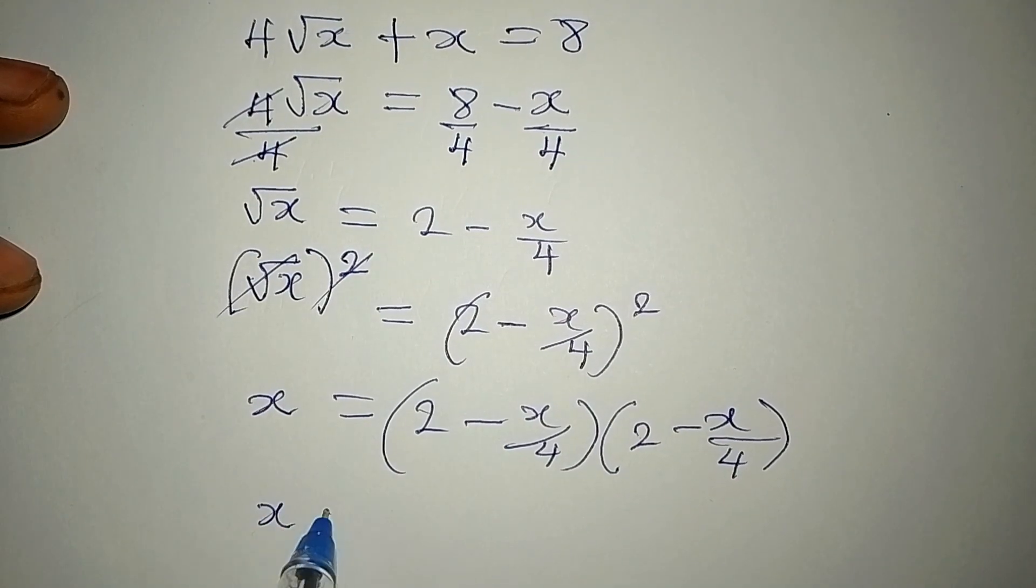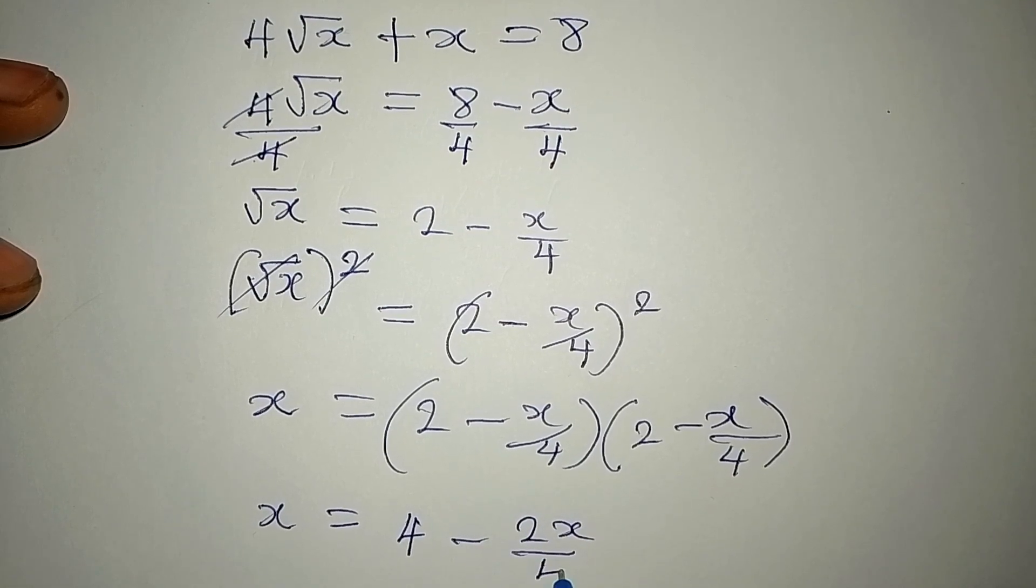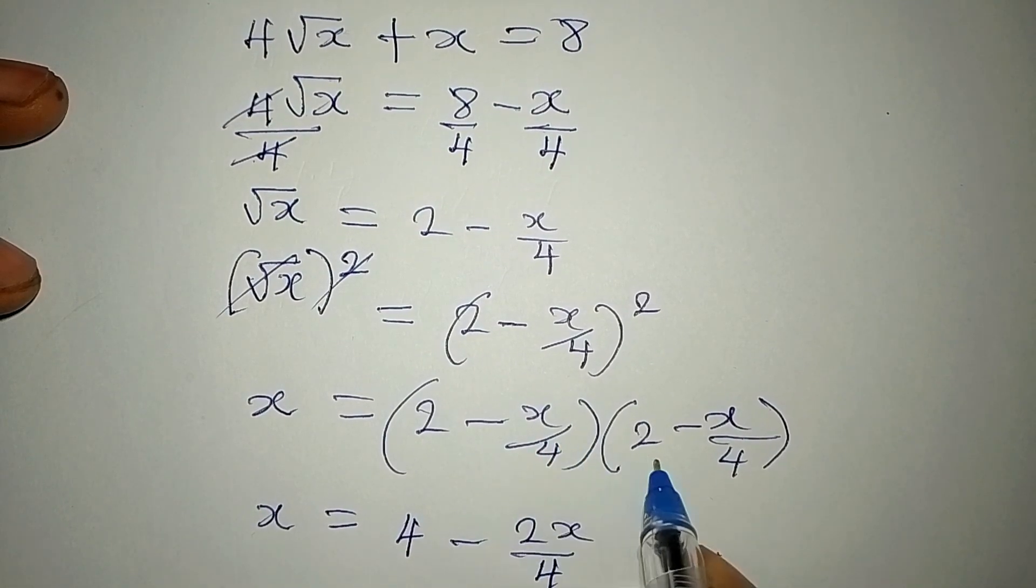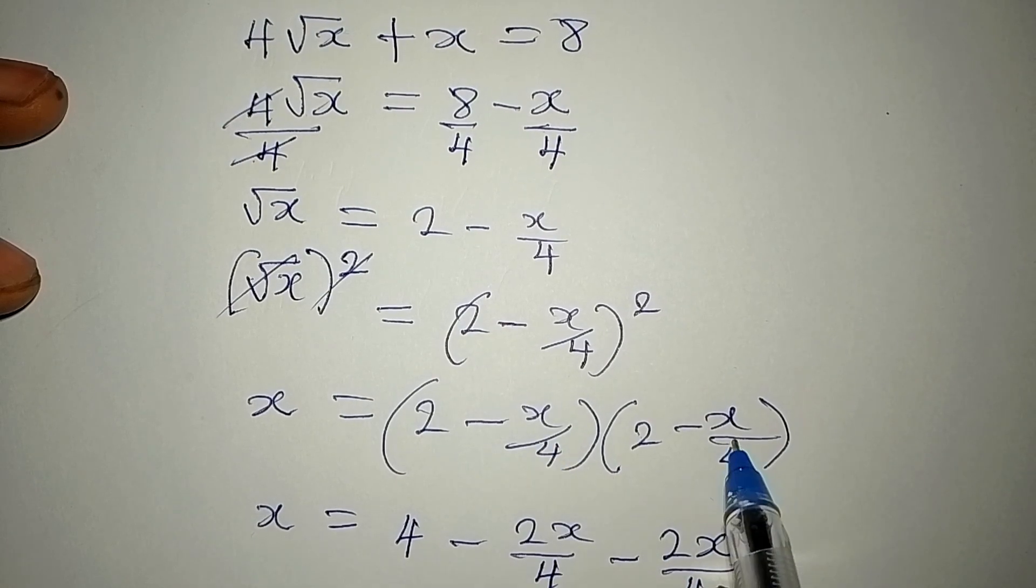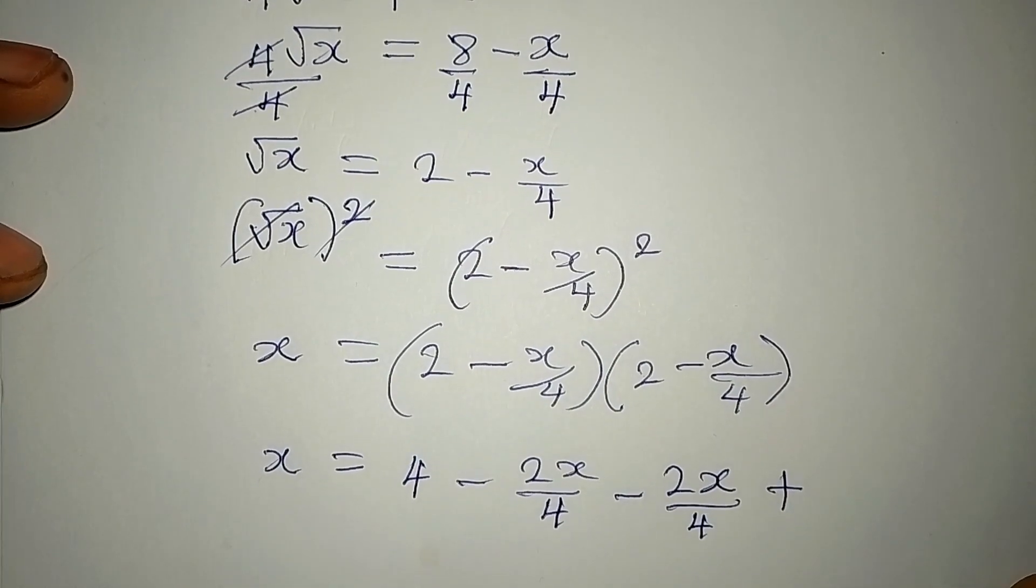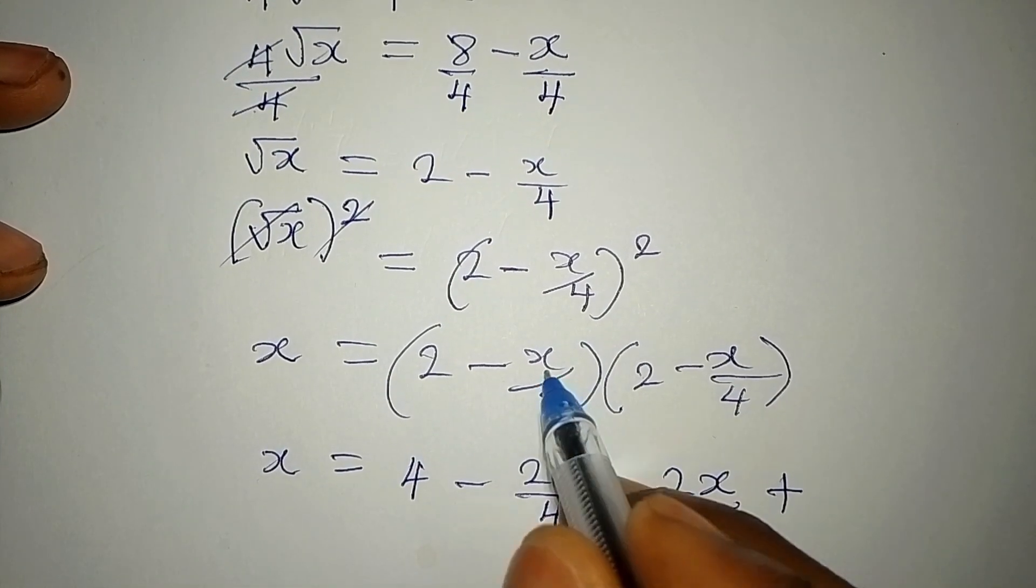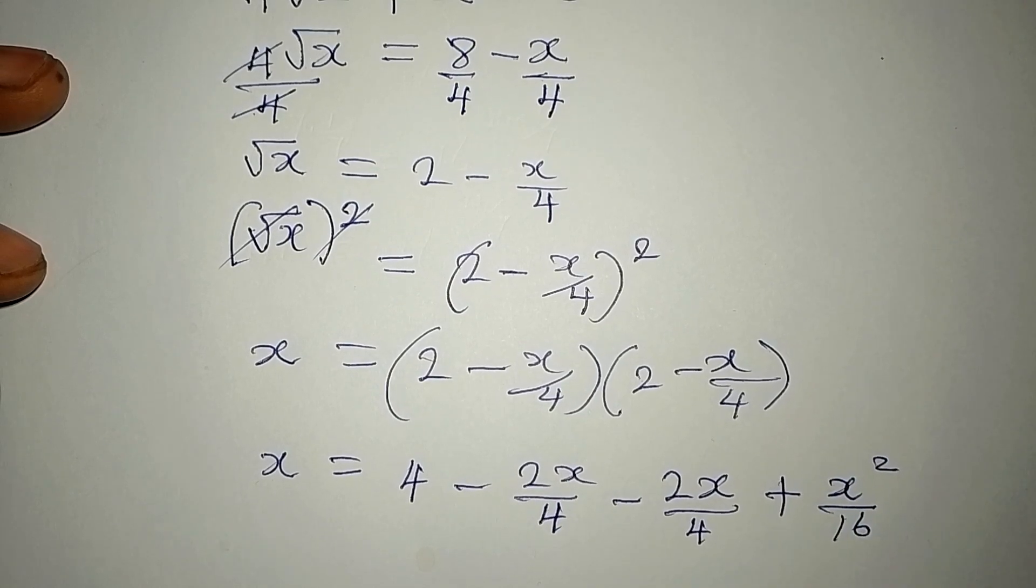Now x is equal to 2 times 2 will give 4, 2 times that will give -2x/4. Then this multiply by this will give -2x/4. And these times this will give +x²/16. So let's continue from here.